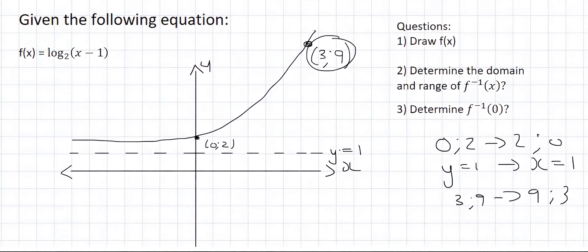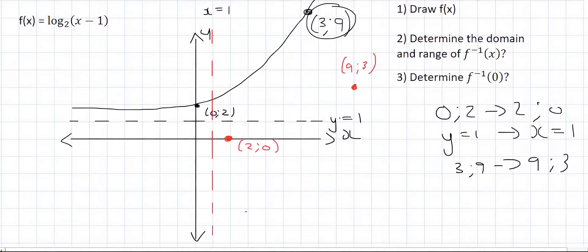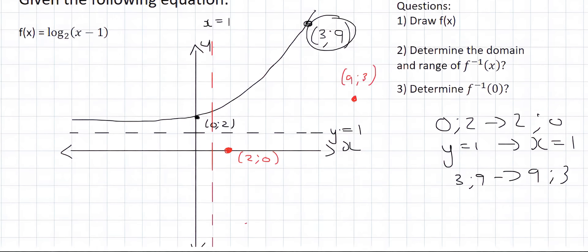So we'll start with the coordinate of 2 and 0. Then, the dotted line of x equals to 1. And then, the coordinate of 9 and 3. And then we can draw the graph. Now look how the exponential hugs the asymptote over here. Well, the log graph does the same. So it goes like this, comes down, and then it goes very close to the asymptote, like that.